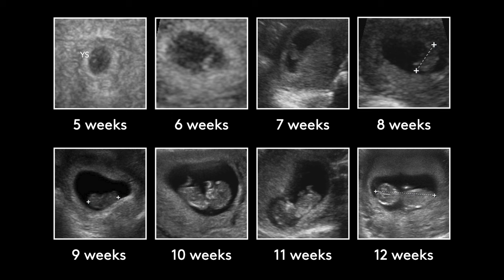Here is the normal progression: at 5 weeks you see the yolk sac; at 6 weeks a tiny embryo with a flickering heartbeat like a little lightning bug; at 7 weeks slightly bigger; at 8 weeks starting to look like a gummy bear with stubby arms and legs; at 9 weeks still gummy bear-like; by 10 weeks you start seeing more definition in the extremities and neck.